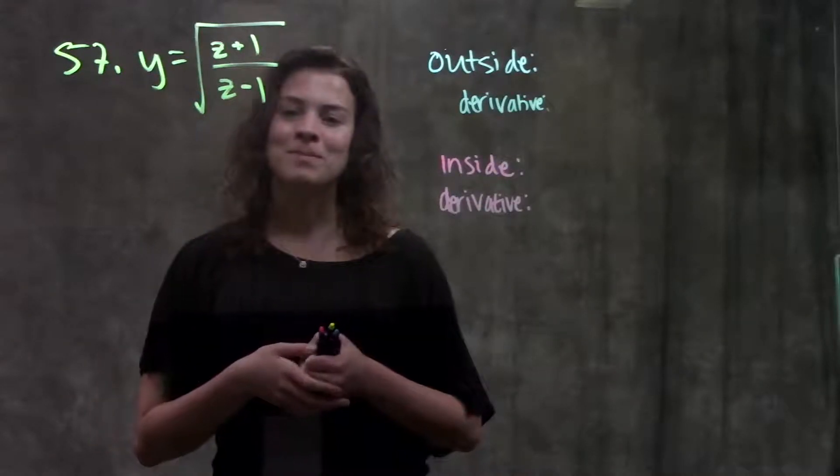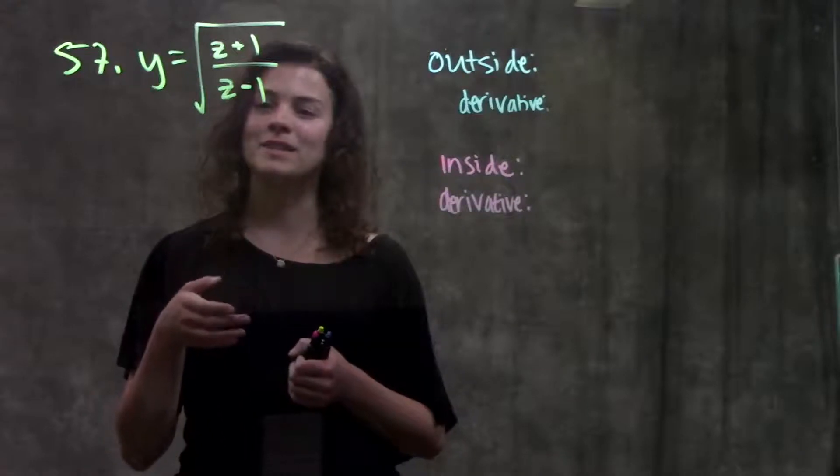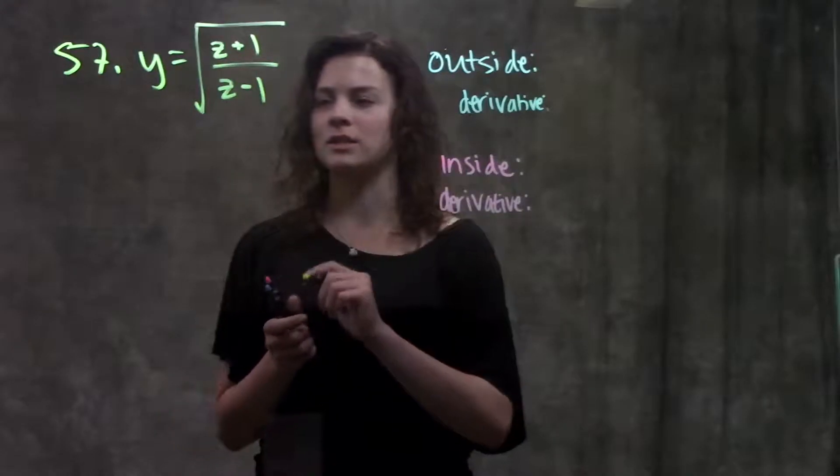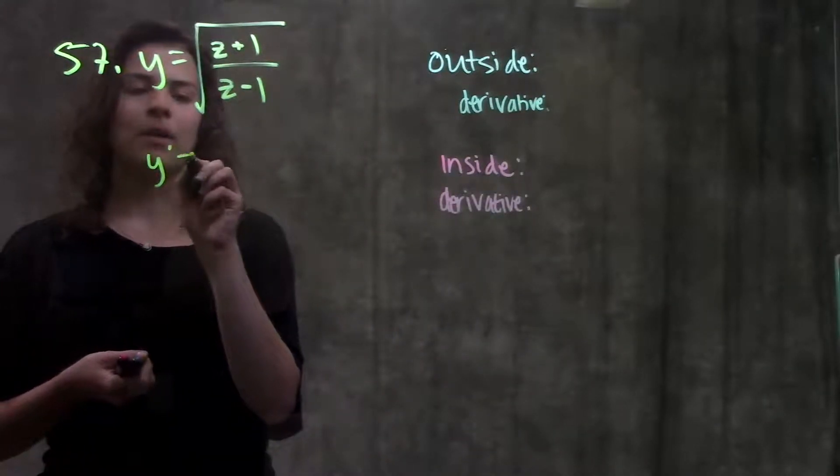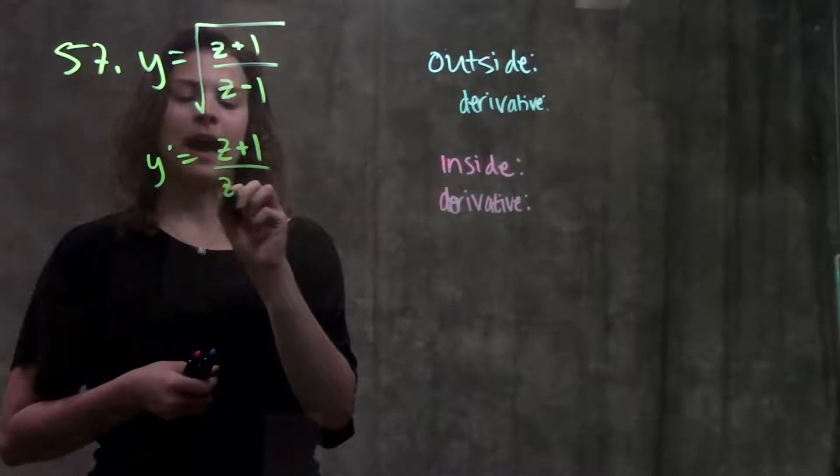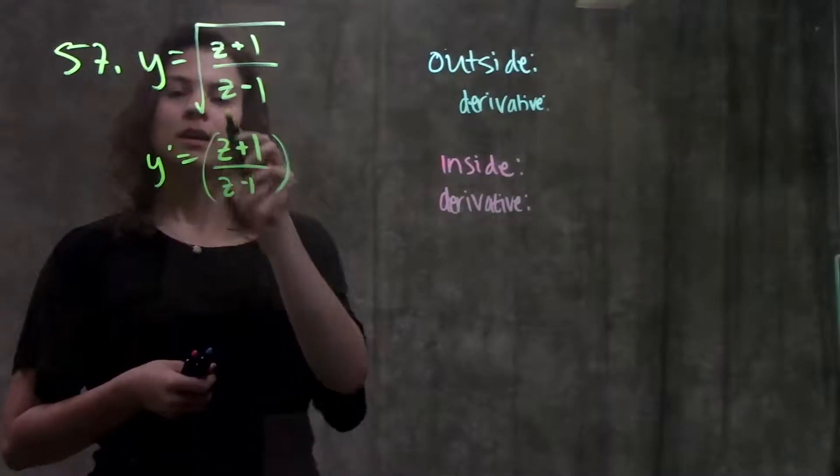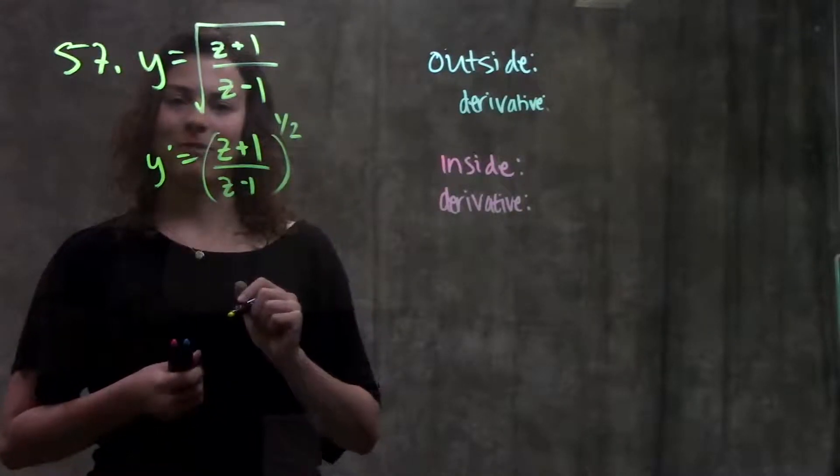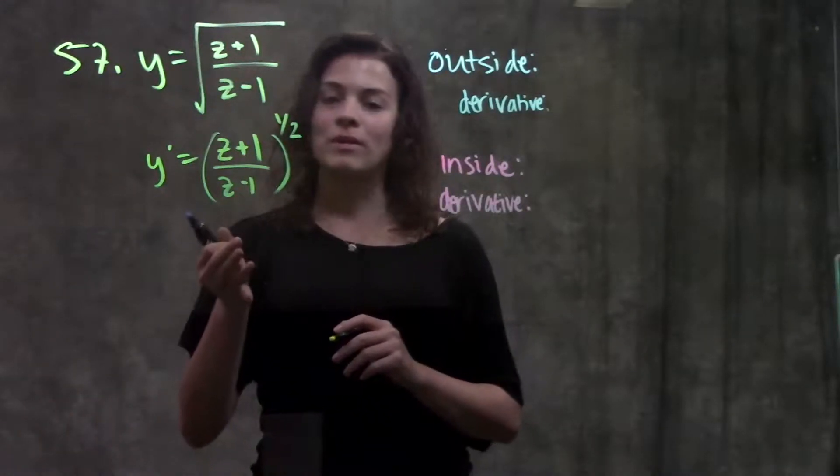So let's go through this example problem. Number 57 in your book gives us this function and asks for the derivative. First thing I'm going to do with this function is whenever I see a radical I'm going to rewrite it as an exponent, just so that it's easier to see how to take the derivative of the function. Remember, the square root can be rewritten as the one-half power. So I've rewritten my function.